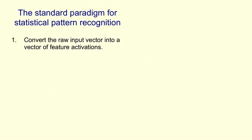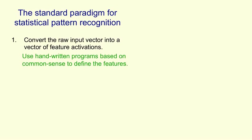In statistical pattern recognition, there's a standard way to recognise patterns. We first take the raw input and convert it into a set or vector of feature activations. We do this using handwritten programmes based on common sense, so that part of the system does not learn. We look at the problem, decide what the good features should be, try them out, and eventually get a set of features that allow us to solve the problem using a subsequent learning stage.